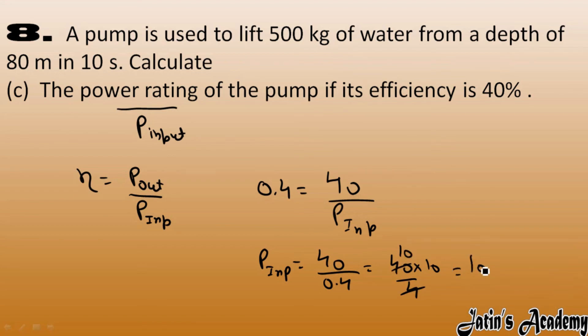Now what we will do, just divide this. Power input as 40 by 0.4, which is 40 into 10 by 4, so it becomes 100. The question has this in kilowatt, so here we got answer in kilowatt. So power input or power rating we got it as 100 kilowatt. Actually we have to calculate, so it is 100 kilowatt.